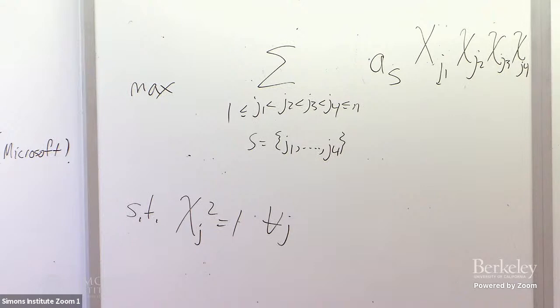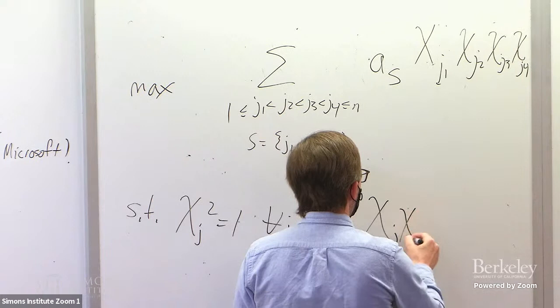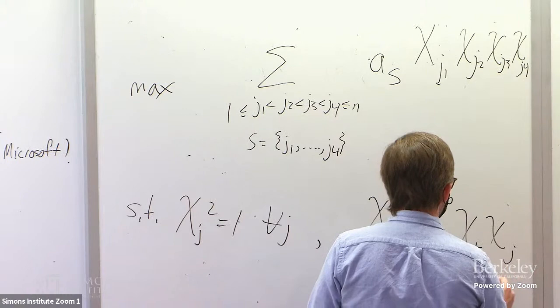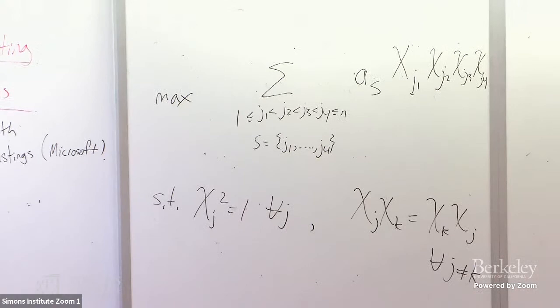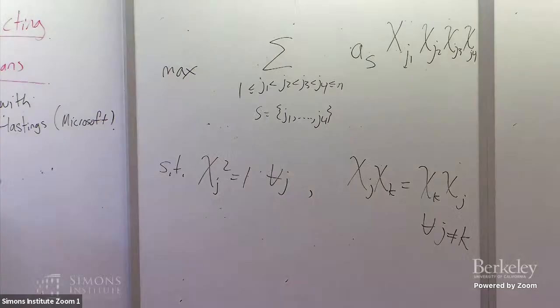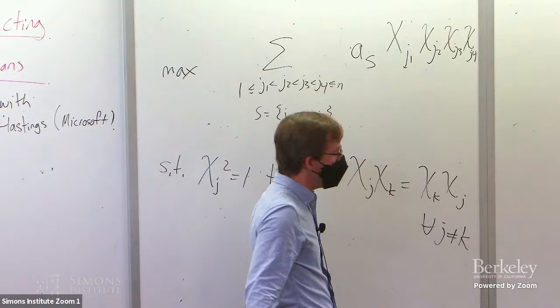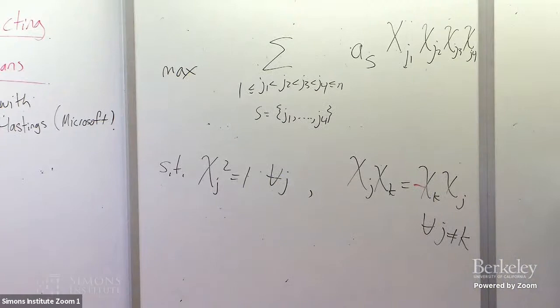When you try to solve this with a sum-of-squares algorithm, you have another relation in mind besides χ_J squared = 1. You're actually always thinking that χ_J χ_K = χ_K χ_J for all J not equal to K, because multiplication of numbers commutes. What this talk is about is: what if instead of the indeterminates commuting, what if they were to anti-commute?